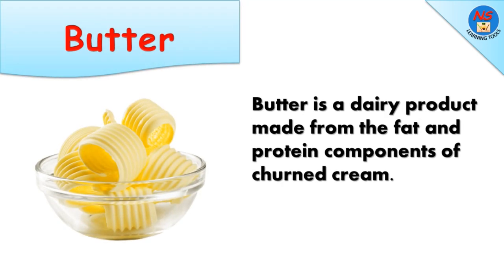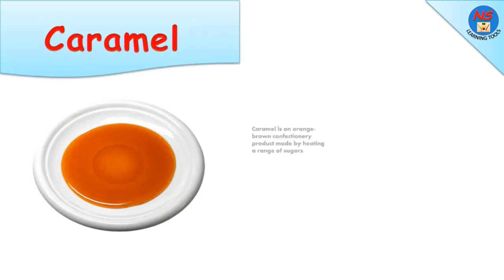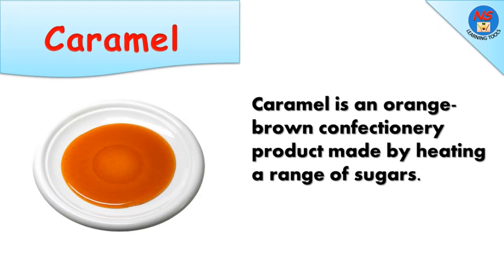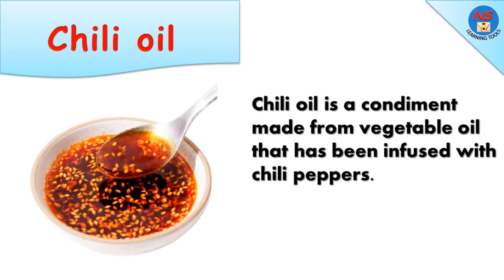Butter is a dairy product made from the fat and protein components of churned cream. Caramel is an orange-brown confectionery product made by heating a range of sugars. Chili oil is a condiment made from vegetable oil that has been infused with chili peppers.